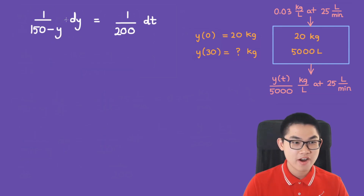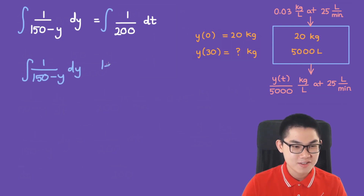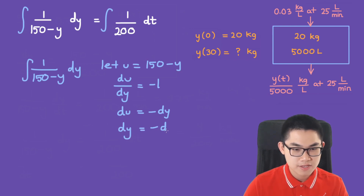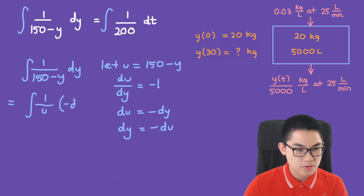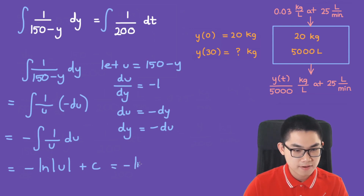Once the variables are separated, we integrate both sides. For the integral of 1/(150 − y) dy, let u = 150 − y, so du = −dy and dy = −du. This integral becomes −∫(1/u) du, which equals −ln|u| + C, and substituting back gives −ln|150 − y| + C. The right-hand side, ∫(1/200) dt, equals t/200 + C.